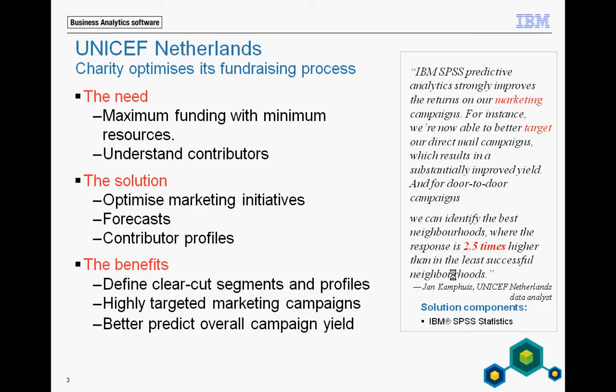Here are some words from UNICEF Netherlands Data Analyst John Kampuis. He says that when they started doing predictive analytics on their marketing campaigns, they improved strongly. For instance, they could better target their marketing campaigns so the right people got the right message. They also tried different channels for marketing, one of them being door-to-door campaigns. After applying predictive analytics to this channel, they increased the response rate 2.5 times.